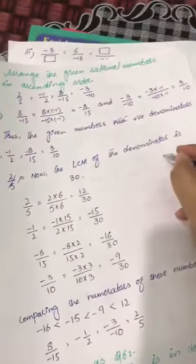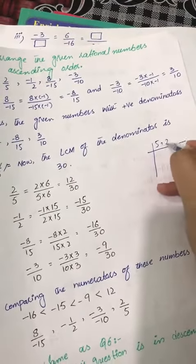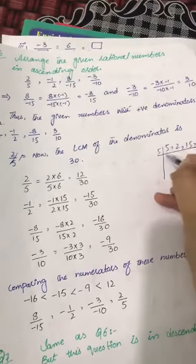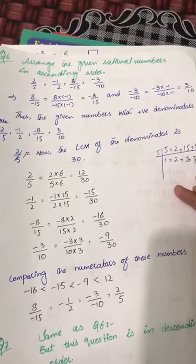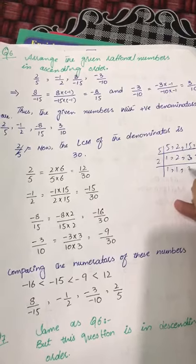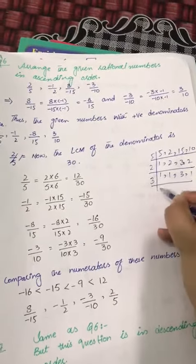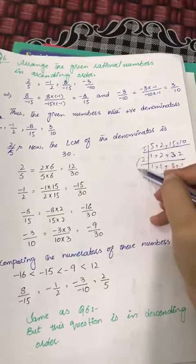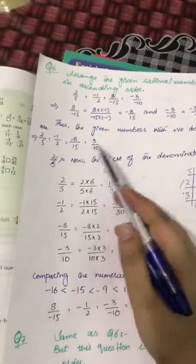How? LCM of 5, 2, 15 and 10. 5, 1, 10, 2, 1, 2, 3, 2, 1, 2, 3, 1, 3, 5, 10 and 10, 3, 30. So 30 will be the LCM of these numbers.